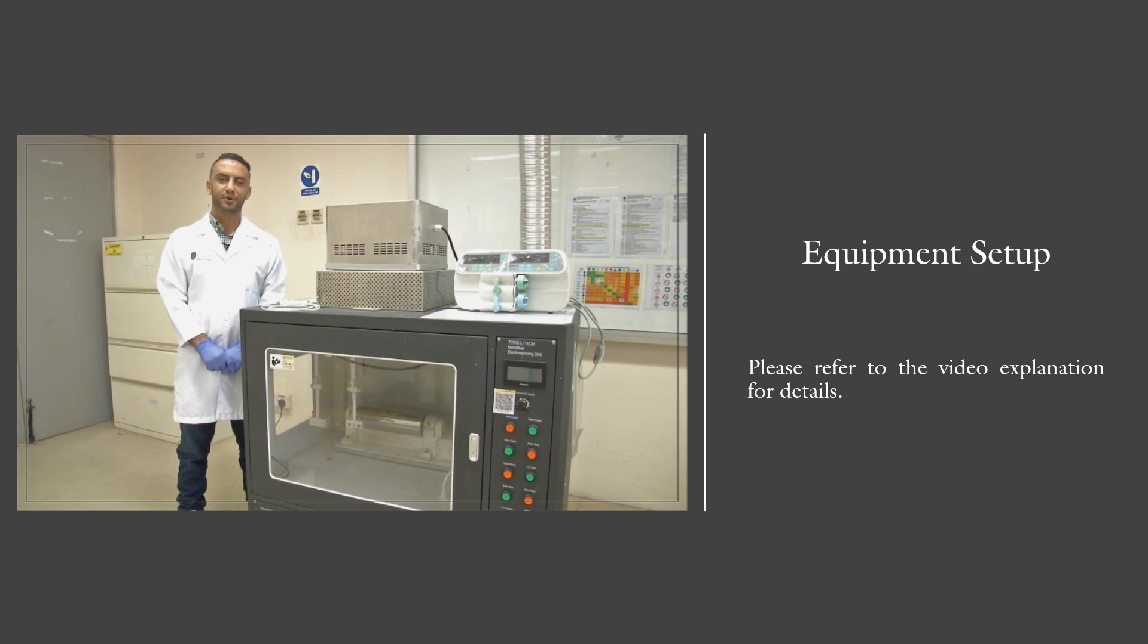Welcome everyone and very good morning. Today I would like to teach you about the electrospinning machine. This machine is used to produce nanofibers, and the range of the voltage is from 0 to 50kV. The process is as follows.